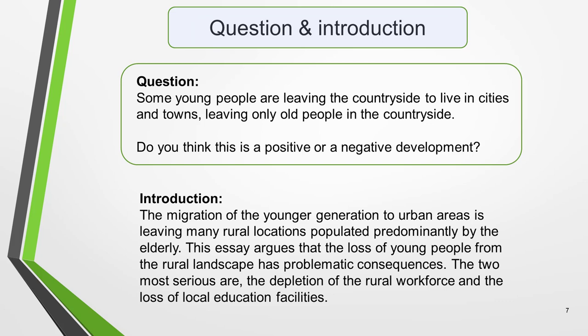The summary sentence is the essential one, so we'll begin with this. We're going to add a conclusion to the essay we created in the lessons on writing Task 2 introductions and main body paragraphs. Here are the question and the introduction. Some young people are leaving the countryside to live in cities and towns, leaving only old people in the countryside. Do you think this is a positive or a negative development? The migration of the younger generation to urban areas is leaving many rural locations populated predominantly by the elderly. This essay argues that the loss of young people from the rural landscape has problematic consequences. The two most serious are the depletion of the rural workforce and the loss of local education facilities.